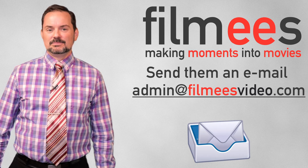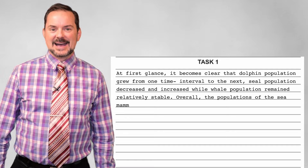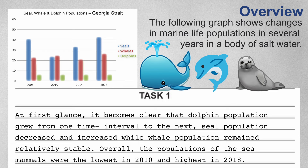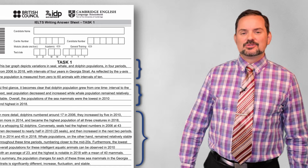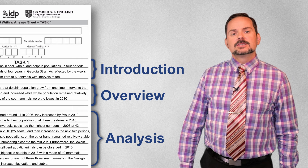Let's take a look at our sample overview for this bar graph. At first glance, it becomes clear that dolphin population grew from one time interval to the next. Seal population decreased and increased, while whale population remained relatively stable. Overall, the populations of the sea mammals were the lowest in 2010 and highest in 2018. Now that we have written a good introduction and overview, we are ready for the analysis.